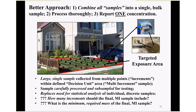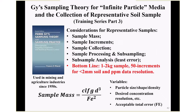At the laboratory, the sample is carefully processed and subsampled for testing. This replaces the need for statistical analysis of individual discrete samples and estimation of the mean based on a 95% UCL. Now we're just sending one sample to the laboratory instead of 10 or 24, saving tremendous money on laboratory costs and avoiding confusion over attempting to use statistical tests to interpret sometimes uninterpretable discrete sample data. How many increments should the final multi-increment sample include? What's the minimum mass that should be included in the bulk sample? This is G sampling theory for infinite particle media — the collection of representative soil samples.